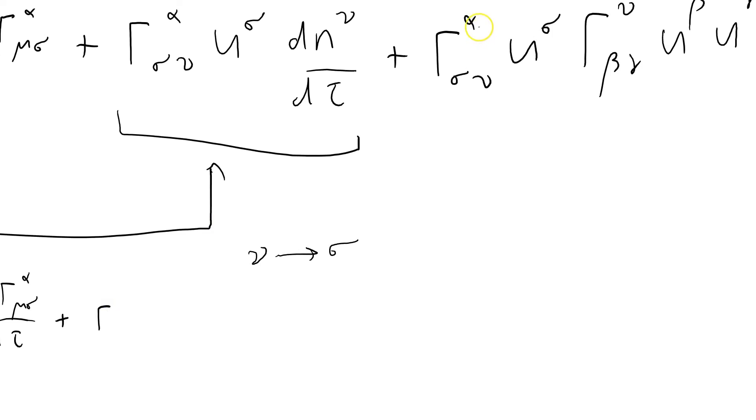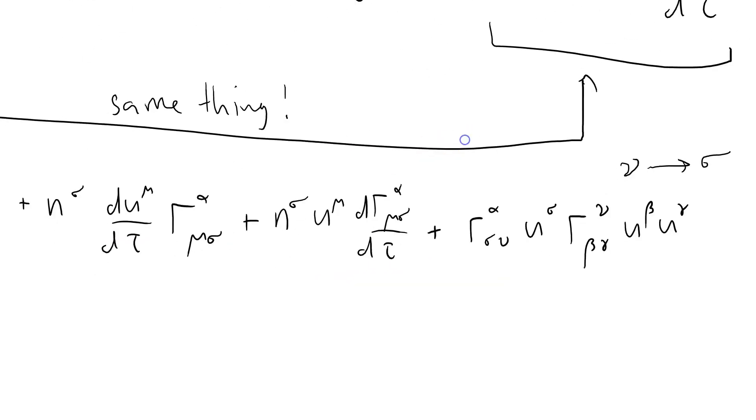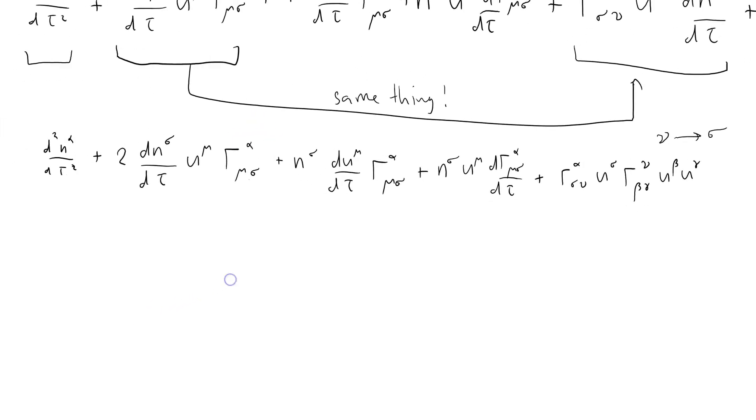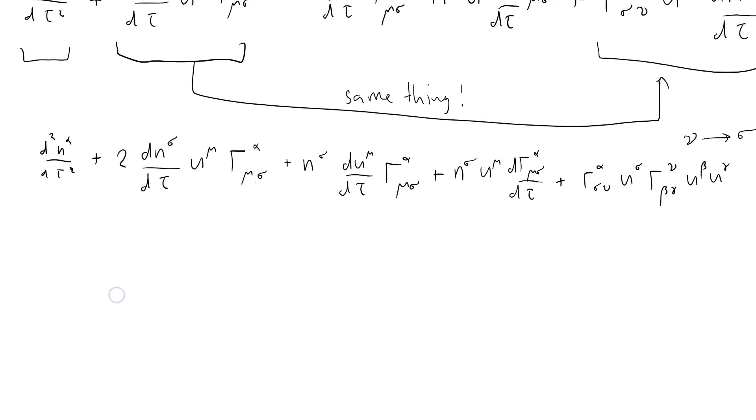Plus Christoffel alpha sigma mu u sigma Christoffel mu beta gamma u beta u gamma. Good grief, good grief, look at this, it's just going on and on, isn't it? But it's the same thing: we've got a real change and here we've got an account which we have to make for our coordinate basis transformation.